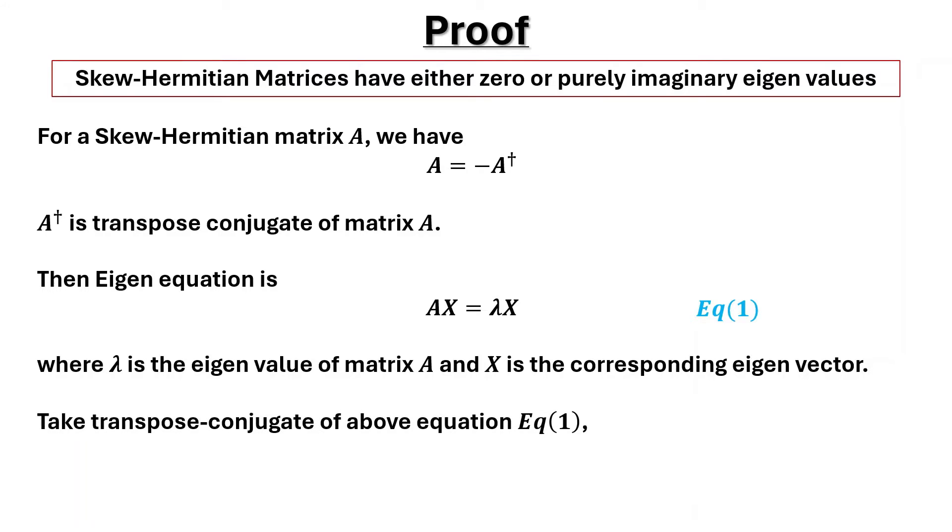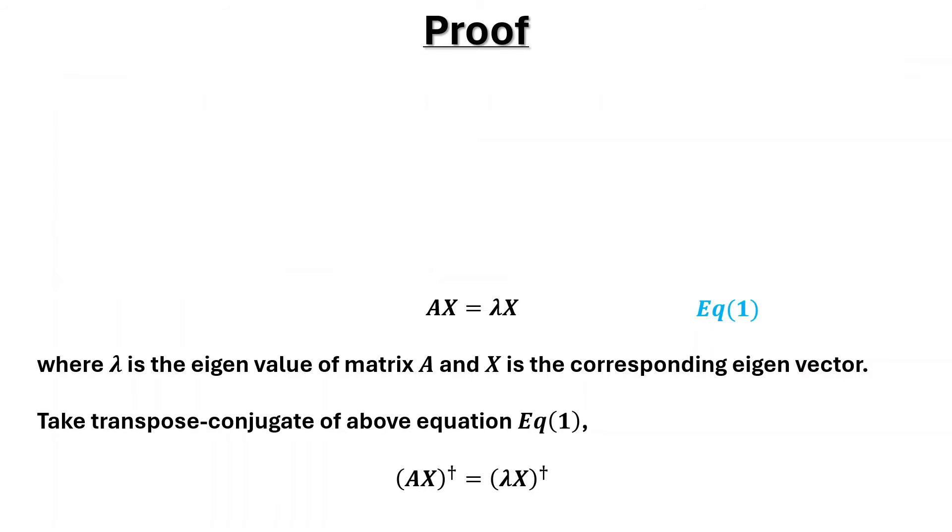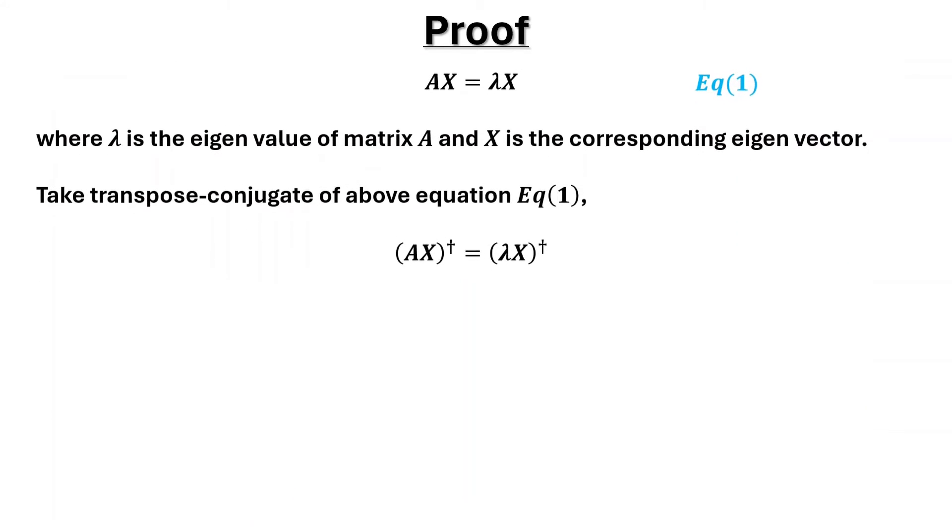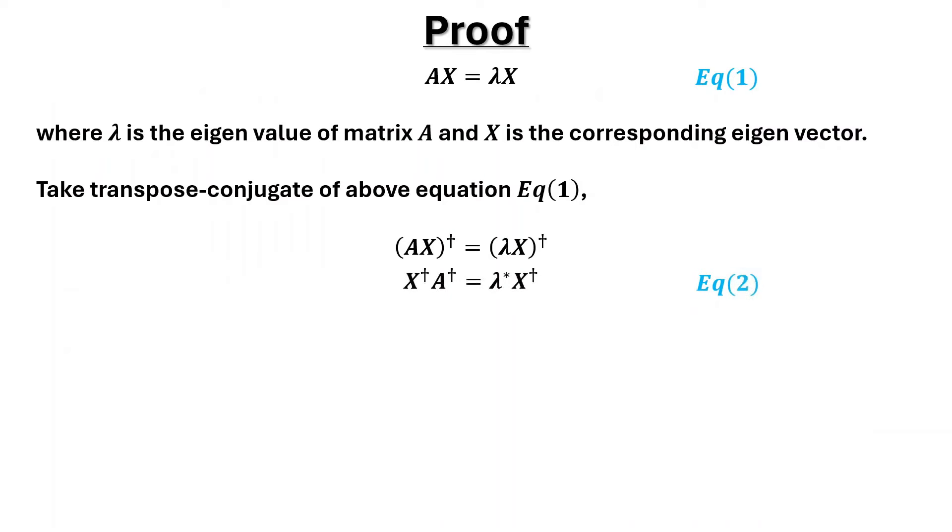Take transpose conjugate of the above equation. We have equation 2. Here lambda asterisk is the conjugate of lambda.